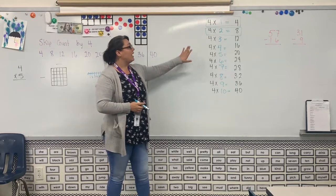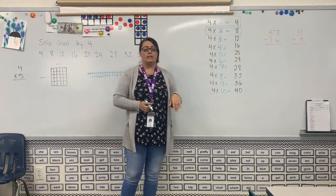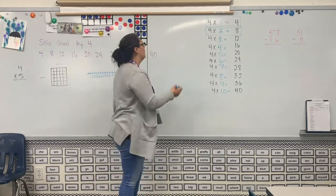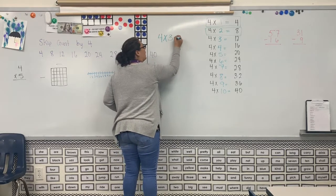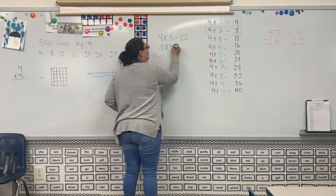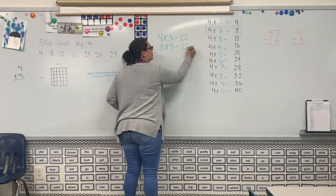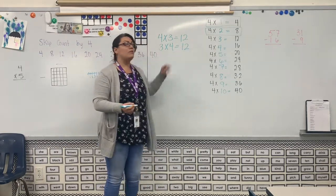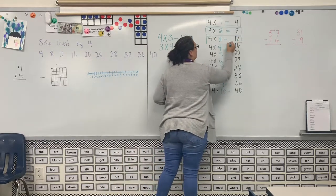So instead of it saying 4 × 3, it said 3 × 4. And remember, 4 × 3 equals 12 and 3 × 4 also equals 12. So we've already talked about this number.